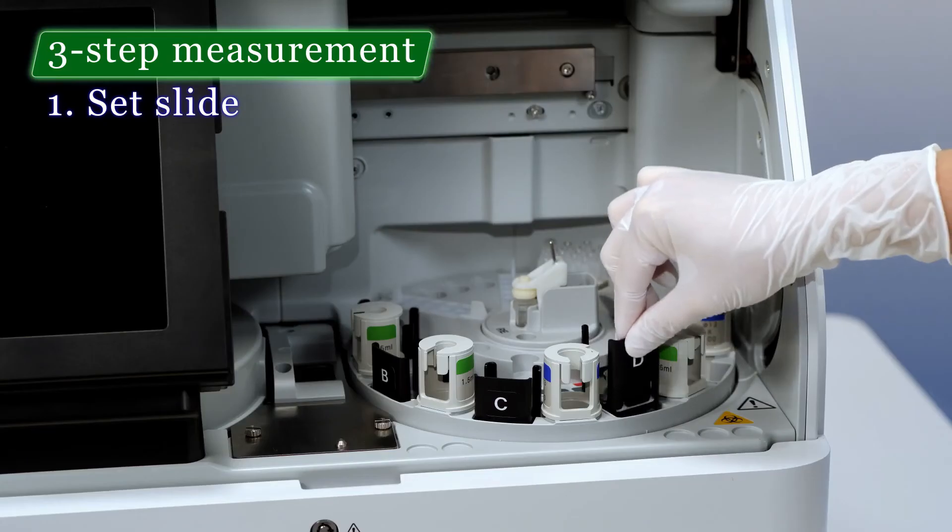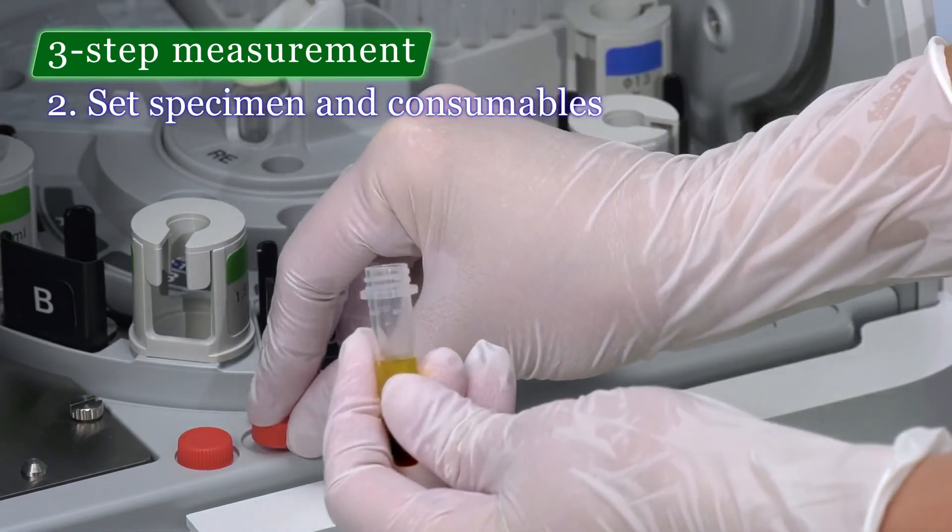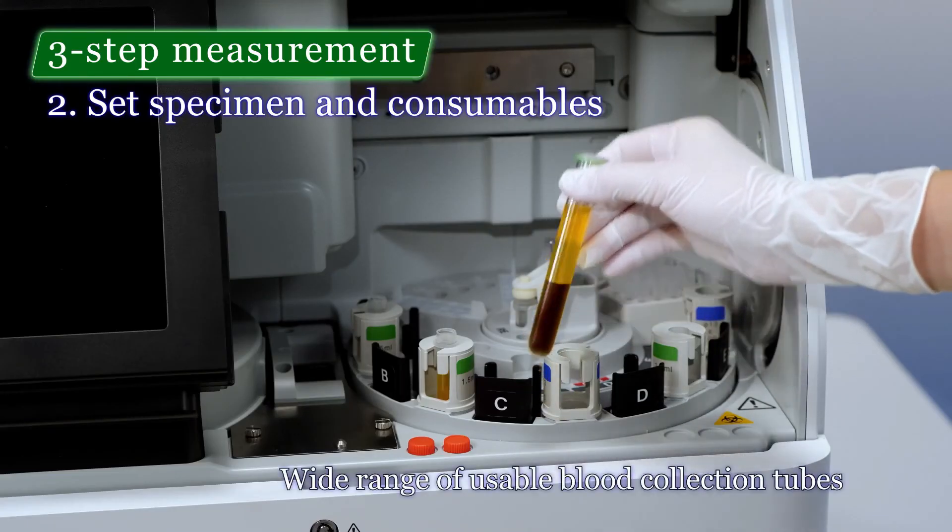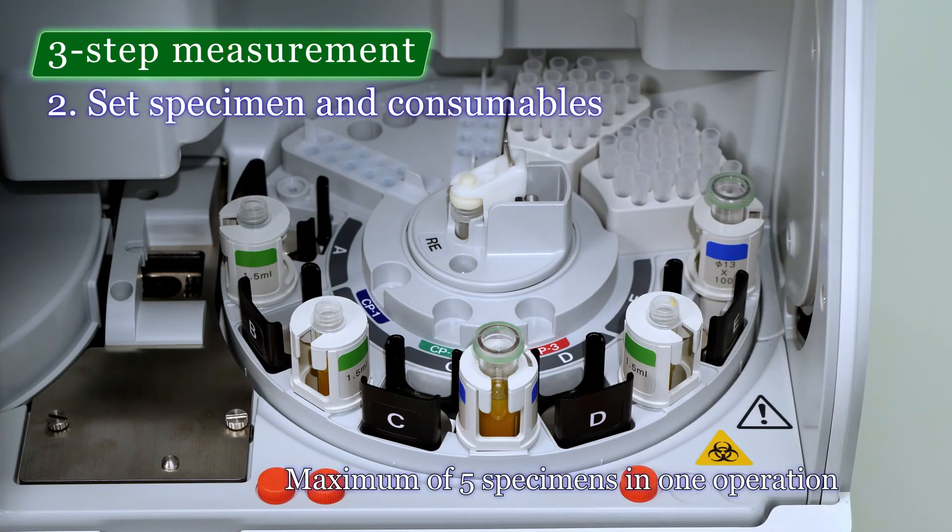The third type of biochemistry analyzer is the dry chemistry analyzers. Dry chemistry analyzers comprise highly sensitive, multi-layered reagent-coated slides instead of wet reagents. It requires only 10 to 50 milliliters of a sample. The results of dry chemistry analyzers are comparable to conventional wet chemistry analyzers.